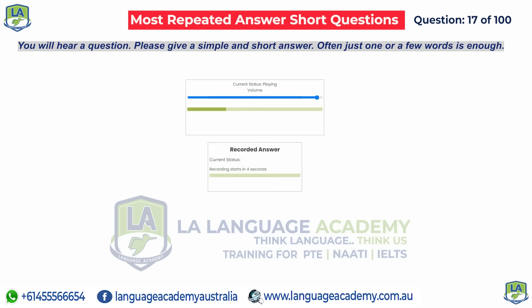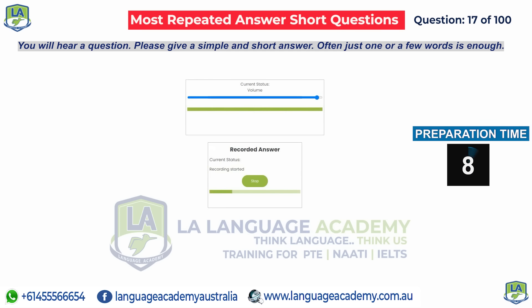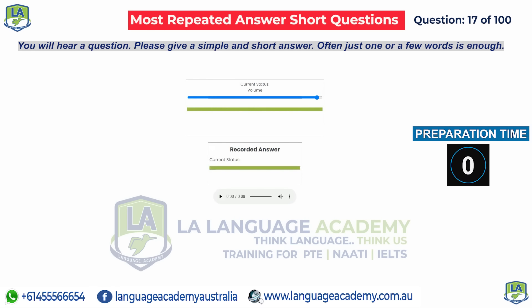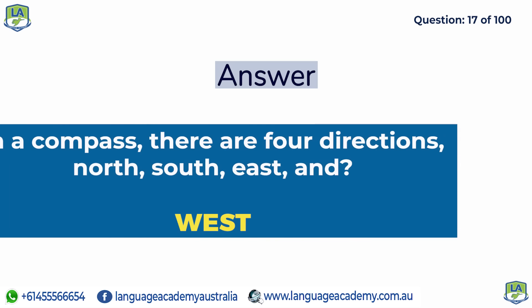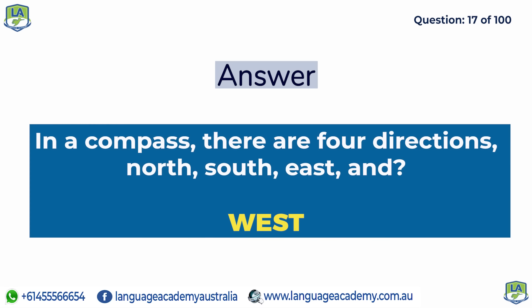In a compass, there are four directions: north, south, east, and west.